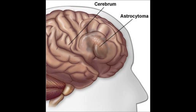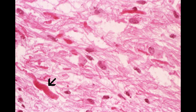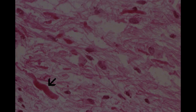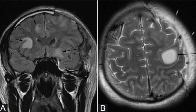Astrocytoma tumors begin in astrocyte cells in the cerebrum and cerebellum. These cells form astroglia, which are star-shaped cells that surround neurons in the brain and spinal cord. They outnumber neurons by about 50 astrocytes to every one neuron. Their purpose is to maintain, support, and repair the nervous tissue, and also to regulate synaptic transmission by creating and releasing glutamate.